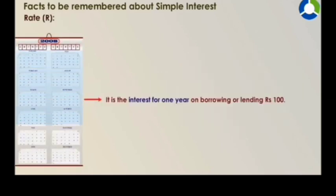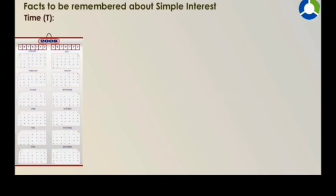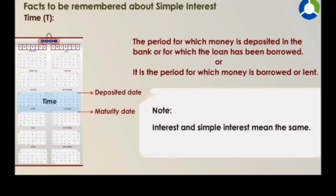Rate R: it is the interest for one year on borrowing or lending Rs.100, or the fixed percentage of the interest on principle which the bank pays per annum, that is per year, is called Rate R. Time T: the period for which money is deposited in the bank, or for which the loan has been borrowed or lent. Note: Interest and Simple Interest mean the same.